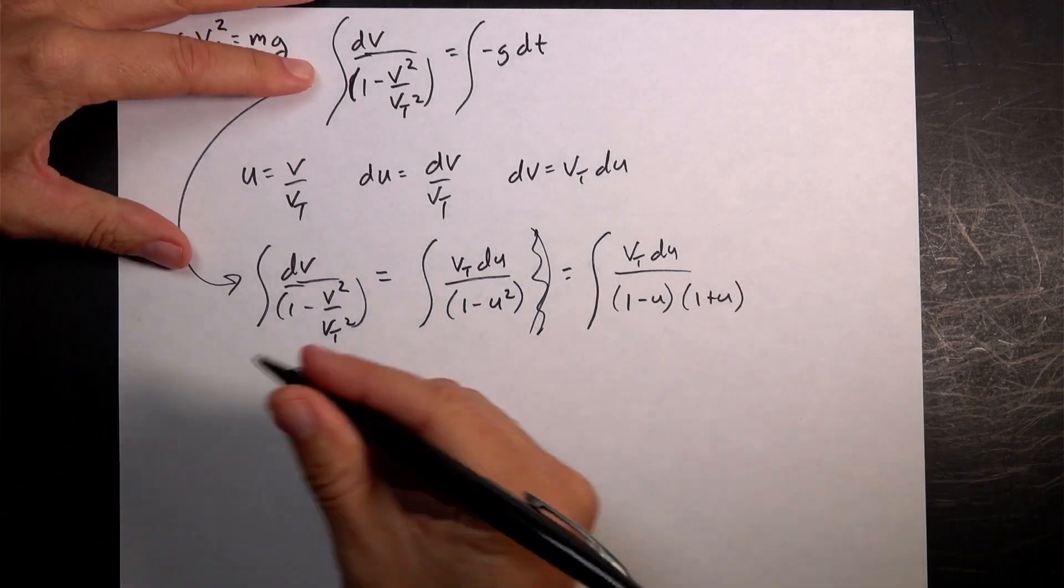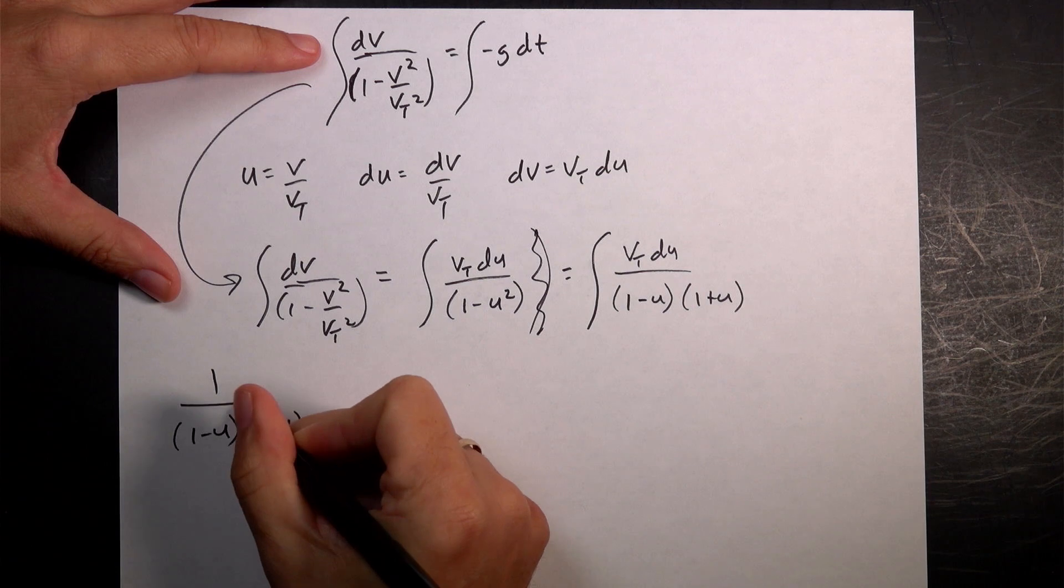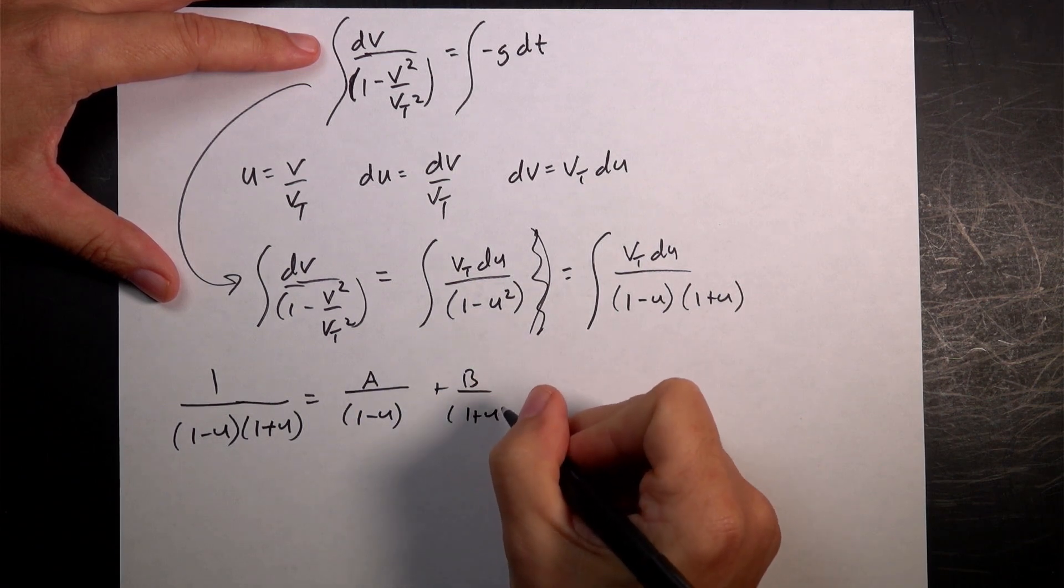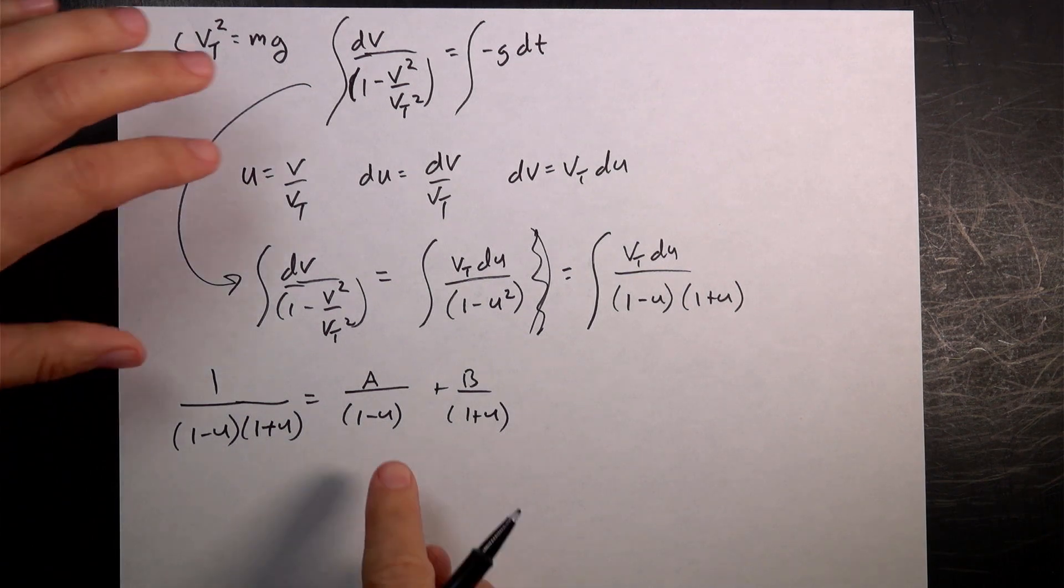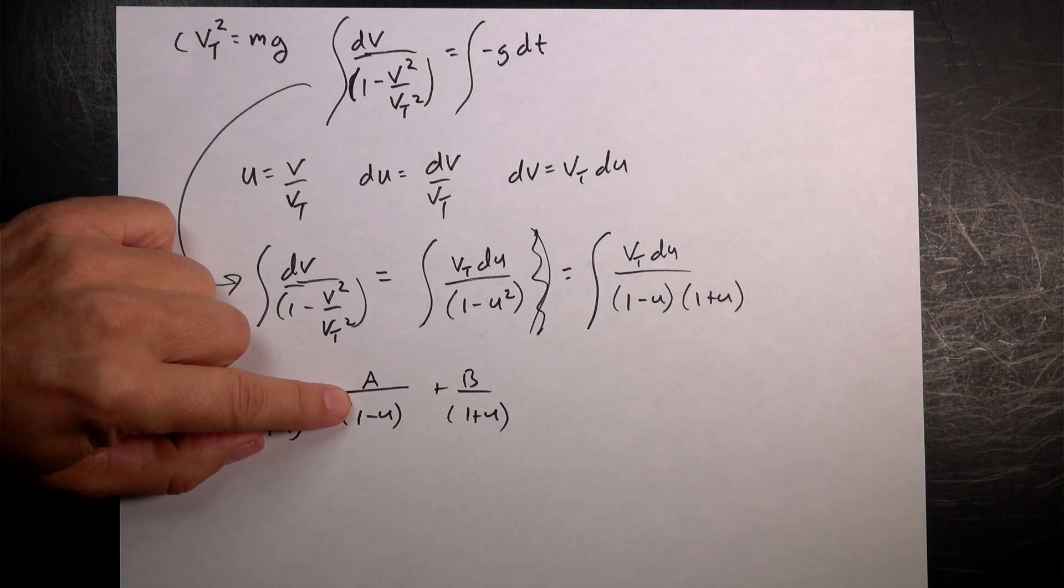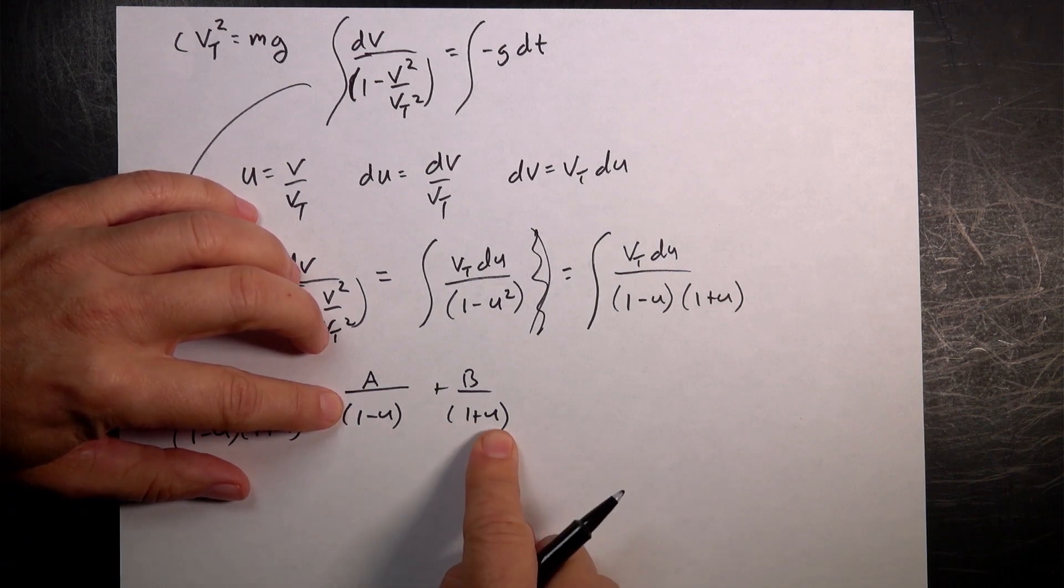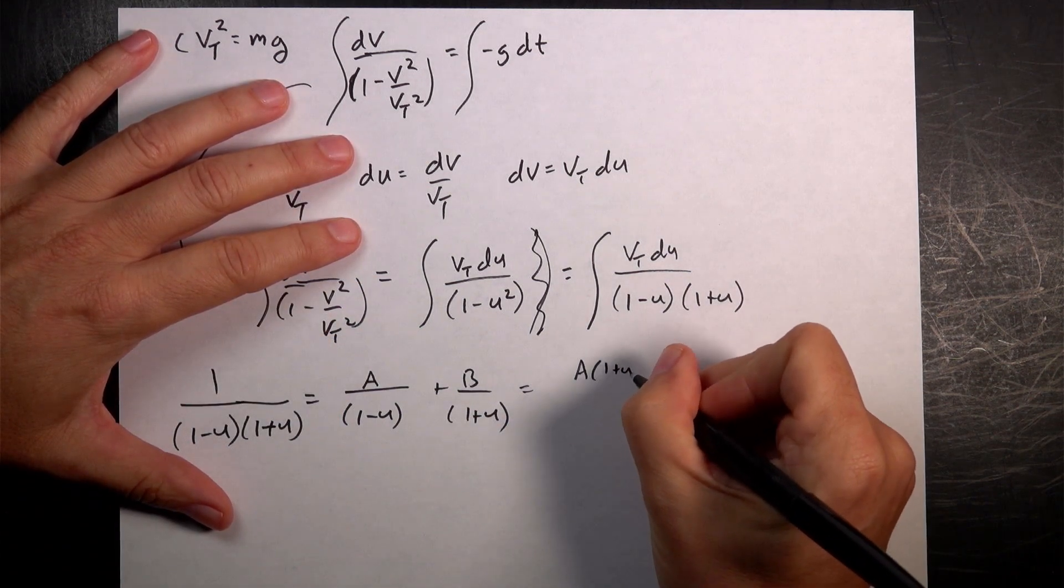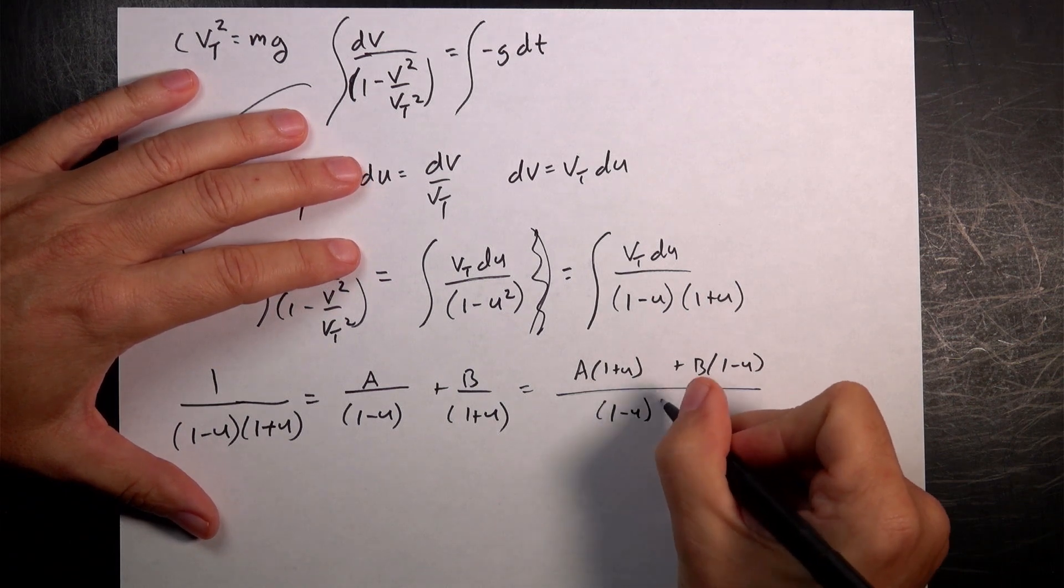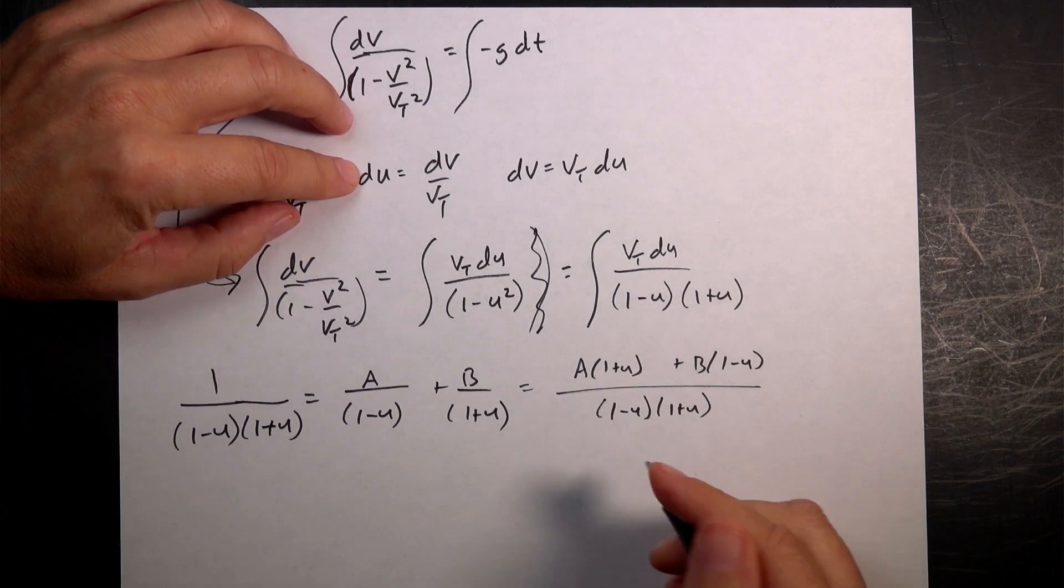Now, I want to write this term. I want to say 1 over 1 minus u times 1 plus u. I want to separate that and call it a over 1 minus u plus b over 1 plus u. But I want to find out what a and b are. So in order to do that, I need just to get a common denominator here. So I'm going to multiply this term. This is, I know this is like, what the heck is he doing? Where's this physics stuff? I know. It's just a long integral. It's fine. So I'm going to multiply this term by 1 plus u over 1 plus u. This term by 1 minus u over 1 minus u.